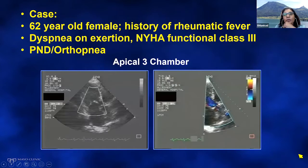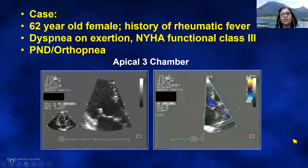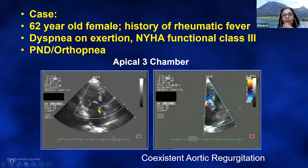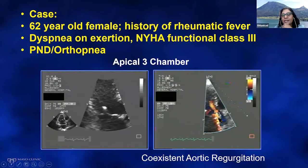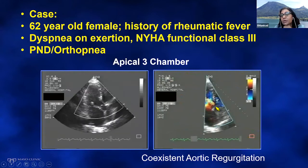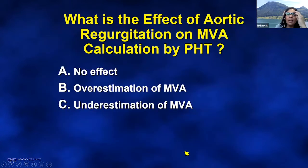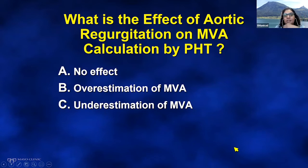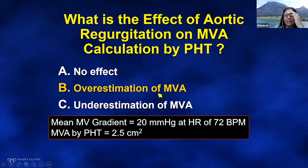Another case: a 62-year-old female with rheumatic fever, class 3 symptoms, PND and orthopnea. Her mitral valve looks rheumatic, but she has coexisting aortic regurgitation. What's the effect of aortic regurgitation on mitral valve area calculated by pressure half-time? In general, we would say there is an overestimation of the mitral valve area, because the pressure half-time will be shorter. In this patient, that mitral valve looked very stenotic with a mean gradient of 20 mmHg at heart rate 72, yet the mitral valve area by pressure half-time was 2.5 cm² — that doesn't make sense.